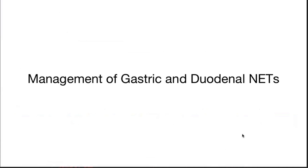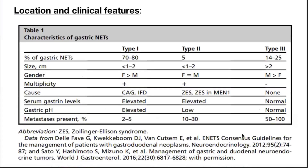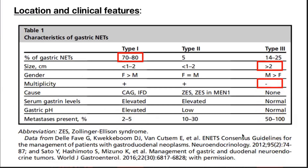Coming to gastric and duodenal neuroendocrine tumors — there are three types: type 1, 2, and 3. Most common is type 1 and least common is type 2. Type 3 is the most malignant and dangerous — generally size is more than 2 cm and associated with metastasis in almost 50 to 100% of patients. Serum gastrin and gastric pH are normal in type 3.